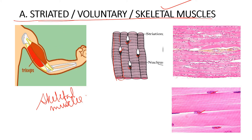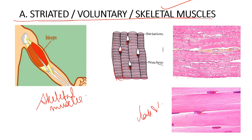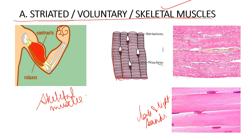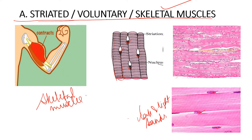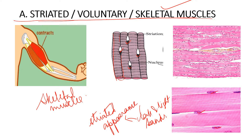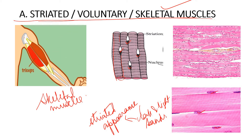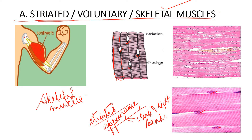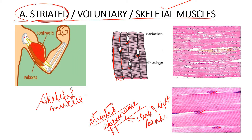Another feature to notice is the alternating dark and light bands visible in the structure. These dark and light bands create what is called a striated appearance. Because of this striated appearance, these muscles are also called striated muscles.